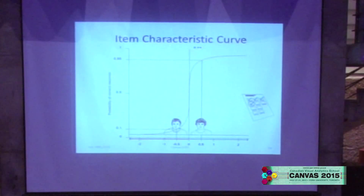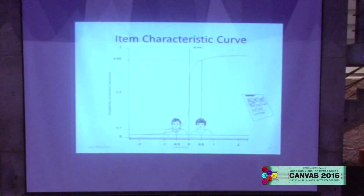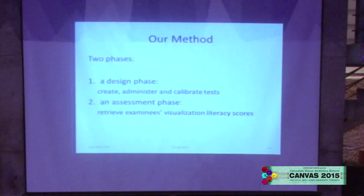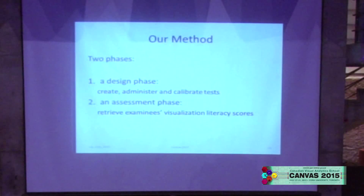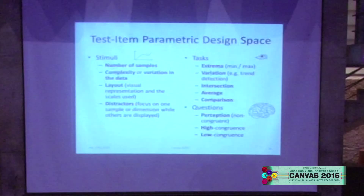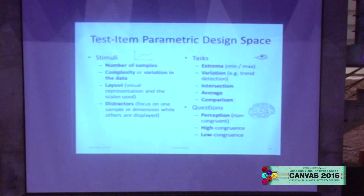The item response theory model allows you, with enough samples, to say for each question what is its difficulty — index B — and also its level of discrimination, whether a particular question discriminates well between two different persons. The method we developed is based on two phases: first, a design phase where we administer a series of questions to a sample set of people to calibrate the test and improve the questions; then an assessment phase where you can apply the test to as many people as you want. In order to create good questions, you balance the level of difficulty by varying the number of items, number of data sets, distractors, and type of visualization.